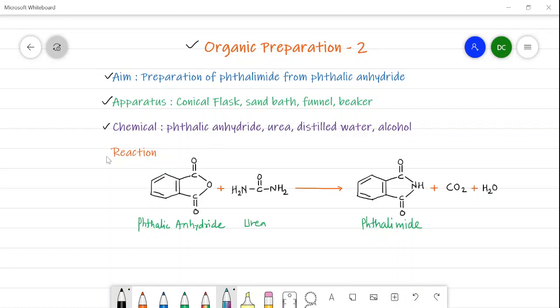Here the chemical reaction is phthalic anhydride is converted into phthalimide when it is treated with urea. You can see here the difference between phthalic anhydride and phthalimide is nothing but here there is a presence of oxygen, but here there is a presence of NH group. So we can say that there is an insertion of NH at the place of oxygen in this reaction.